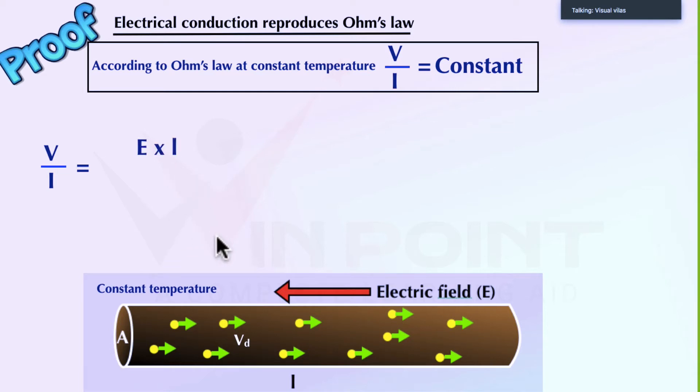Instead of this V, we are using the equation E into L. This is L and this I. Because this is the distance here. In the conductor, L is the distance. Potential difference is E into D. So here L is the distance, it is E into L. All divided by, what is the equation for I? It is N E A VD. Minus N E A VD. Right? I equal to minus N E A VD.